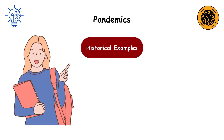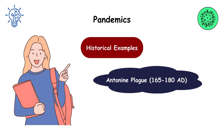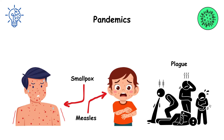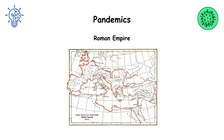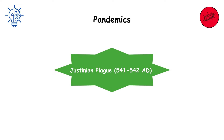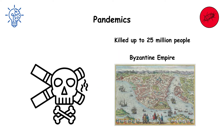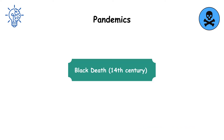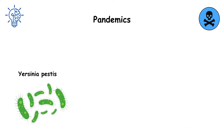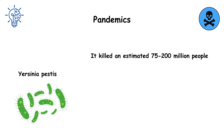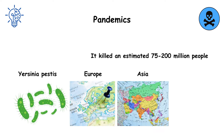Historical examples: The Antonine Plague (165–180 AD), likely caused by smallpox or measles, devastated the Roman Empire. The Justinian Plague (541–542 AD) killed up to 25 million people in the Byzantine Empire. The Black Death in the 14th century, caused by Yersinia pestis, killed an estimated 75 to 200 million people in Europe, Asia, and Africa.